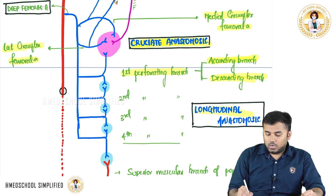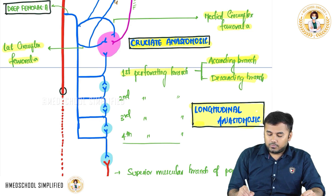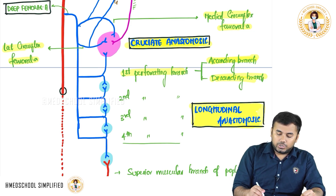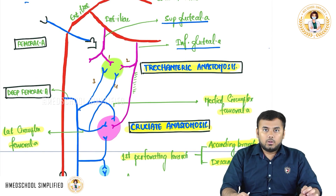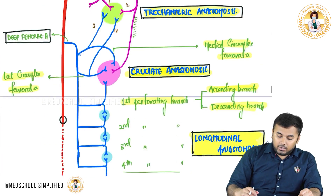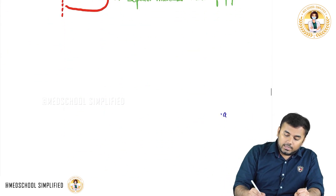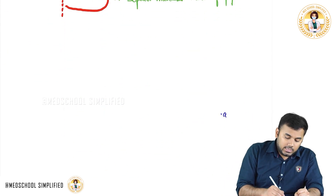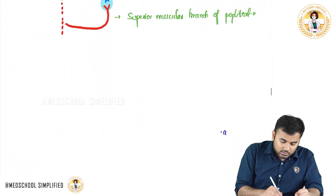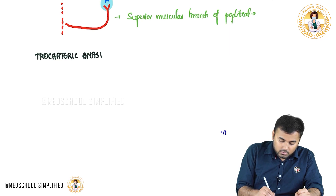Overall we have three types of anastomoses: the trochanteric anastomosis at the top, the cruciate anastomosis, and the longitudinal anastomosis. These are the three different types of anastomoses seen on the back of the thigh.